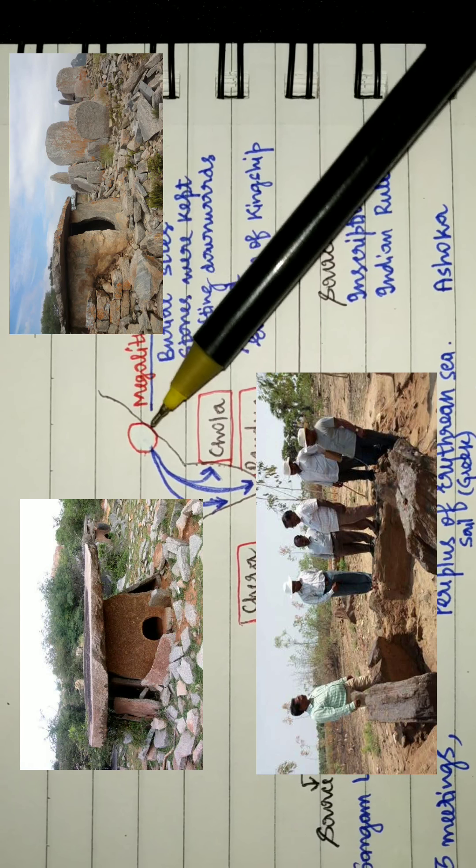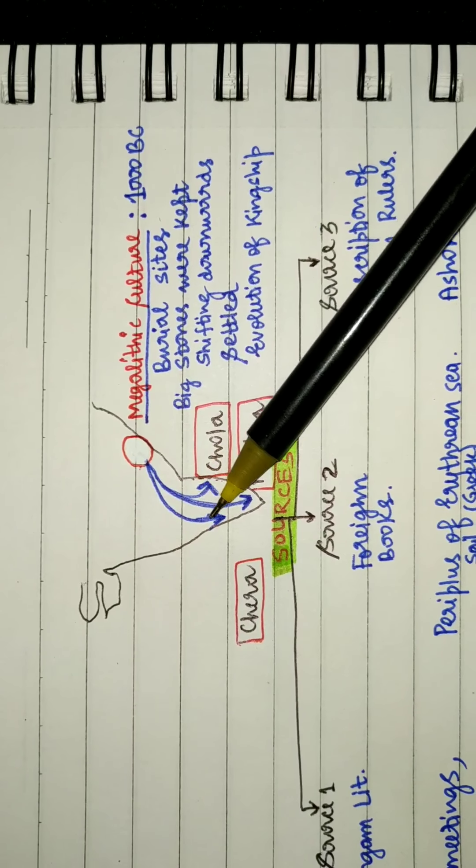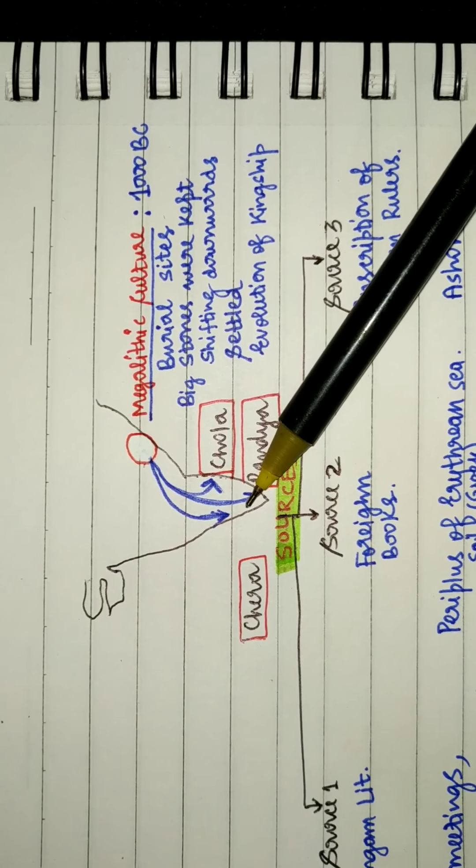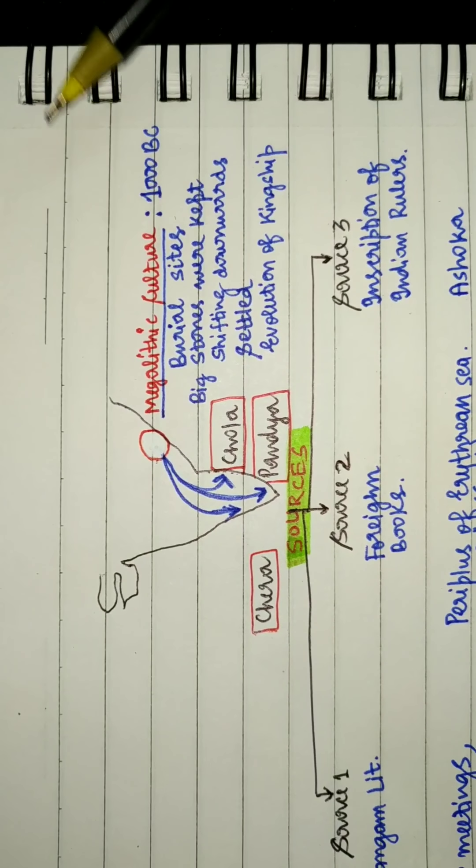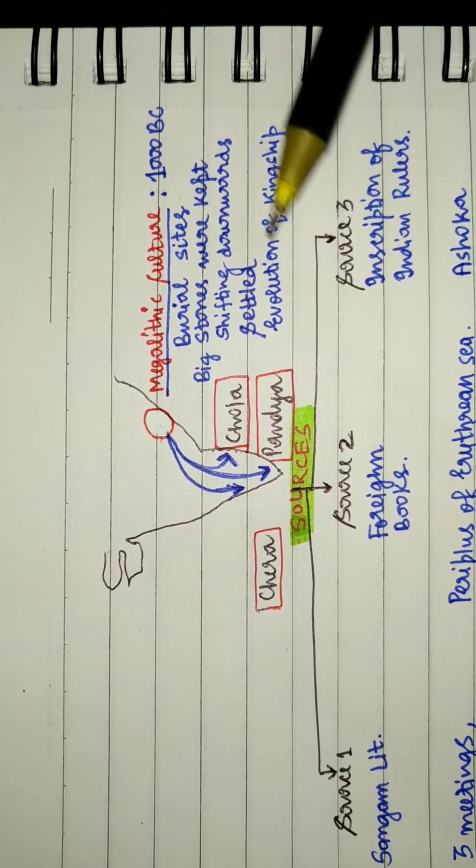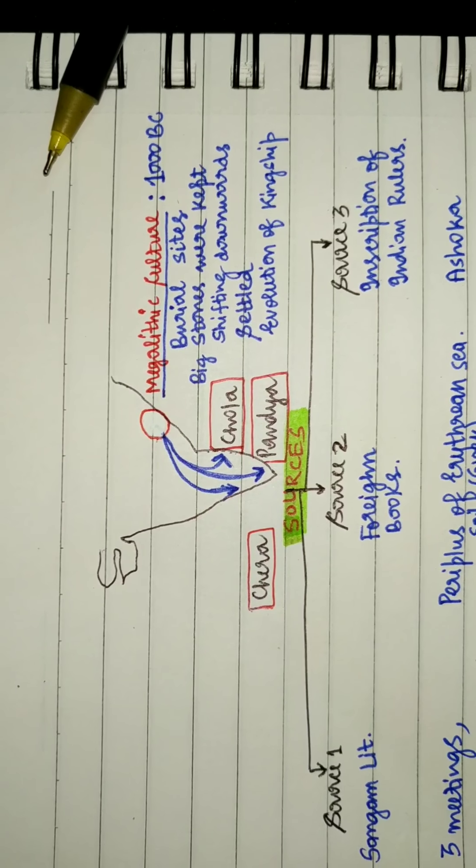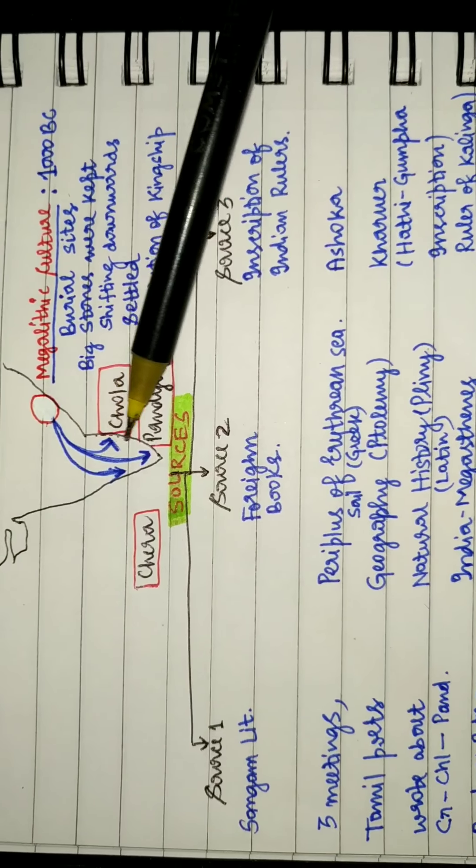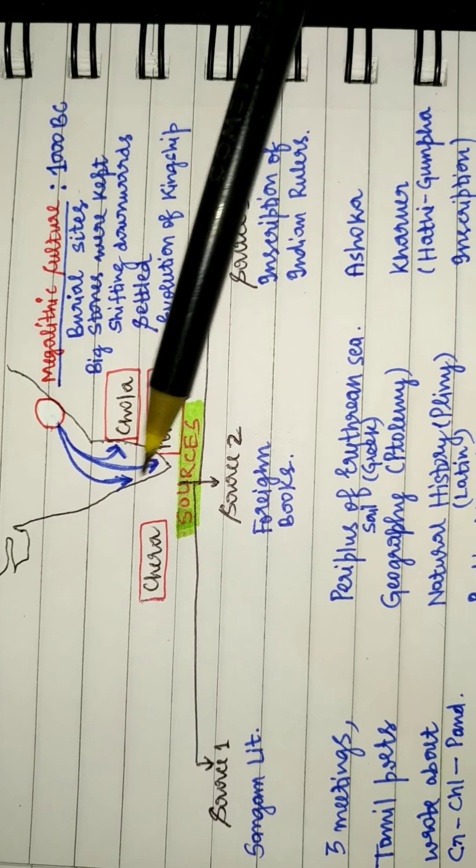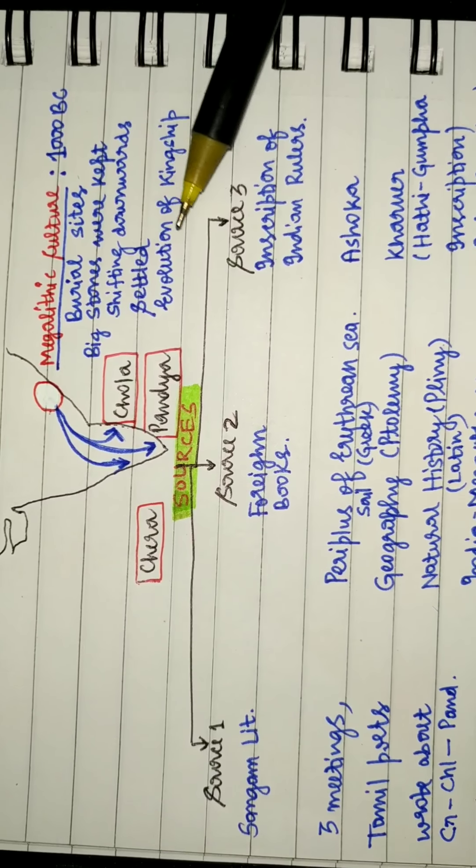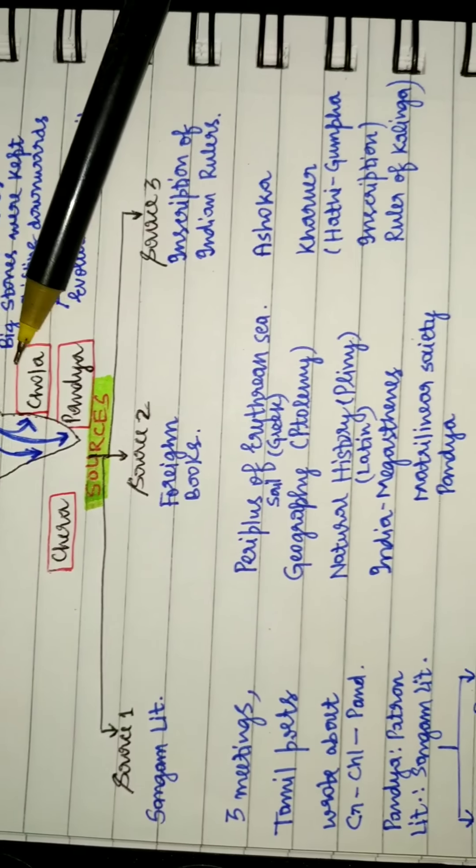These people started moving and shifting downwards to the southern part of India. They settled there. Soon kingship and monarchy system started to develop, and they moved into three distinct topographical areas. The kingship evolved and were named as Chera, Pandya, and Chola.